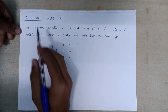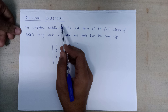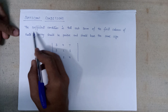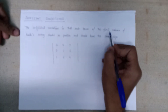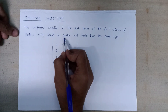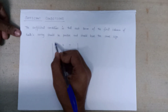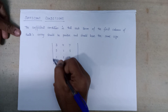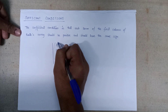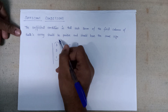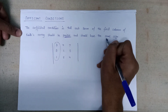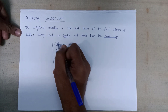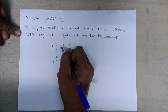Now let's discuss the sufficient condition for the system to be stable. There is only one sufficient condition: each term of the first column of the Routh Array should be positive and should have the same sign. Here, all the elements of the Routh Array are present, and the first column elements should all be positive and of the same sign.